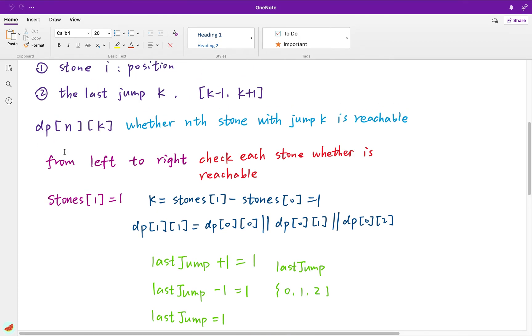So our duty is just to fill this DP array. Let's see the example. Stone 1 equal to 1, and we get k equal to stone 1 minus stone 0, because this is the very first stone. So the k is 1. dp[1][1], what does that mean? This 1 means the first stone. This k is the jump 1. Its value is dependent on these three values. As long as any of these three values is true, then it is true.